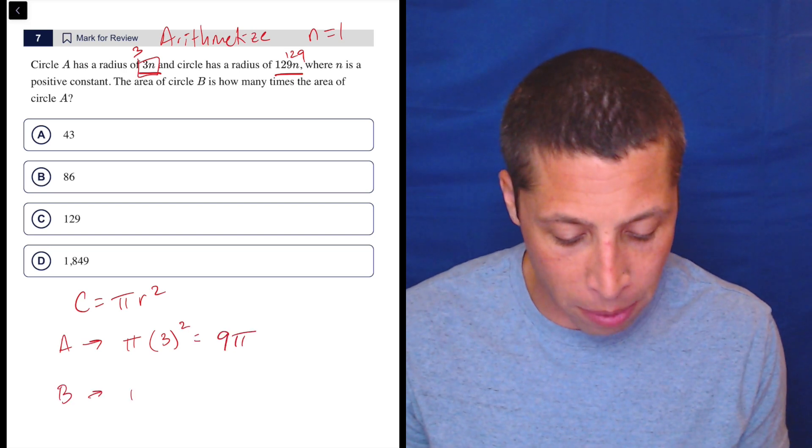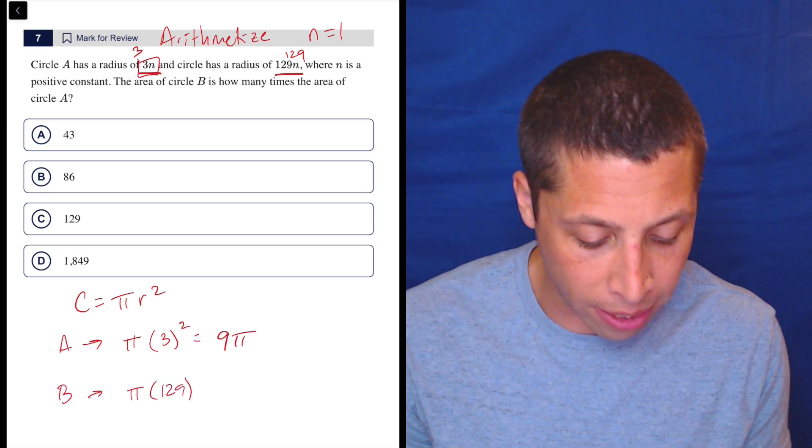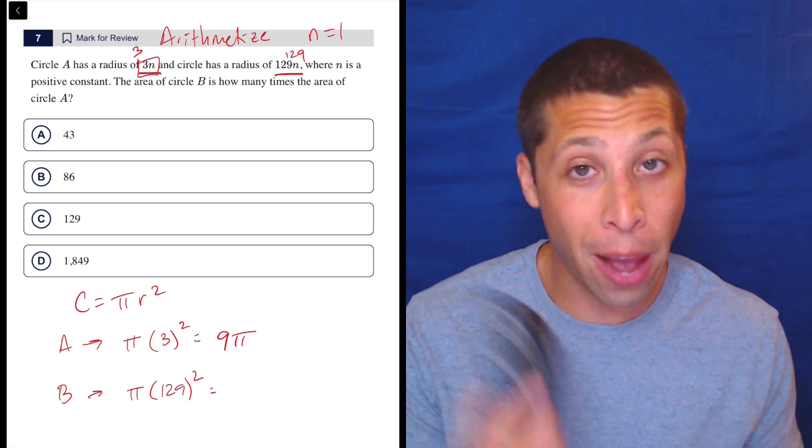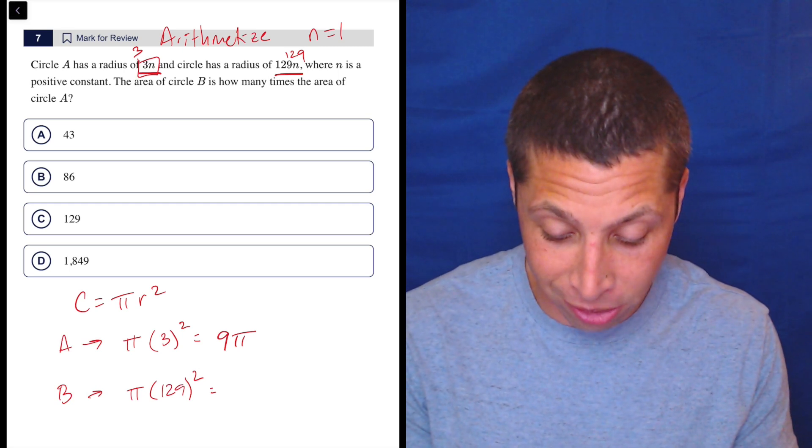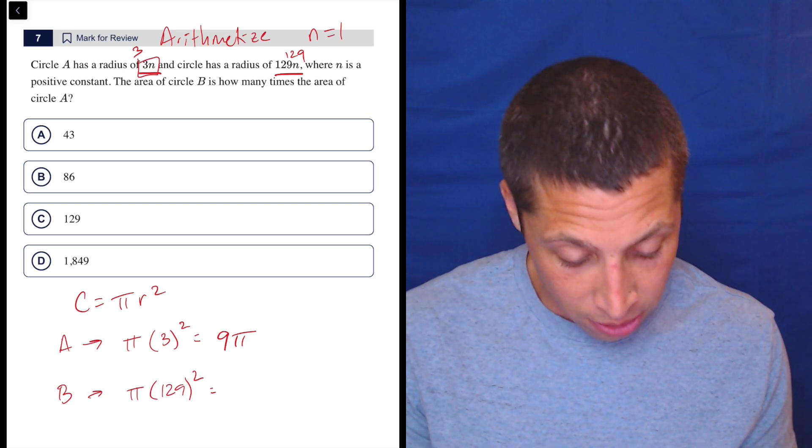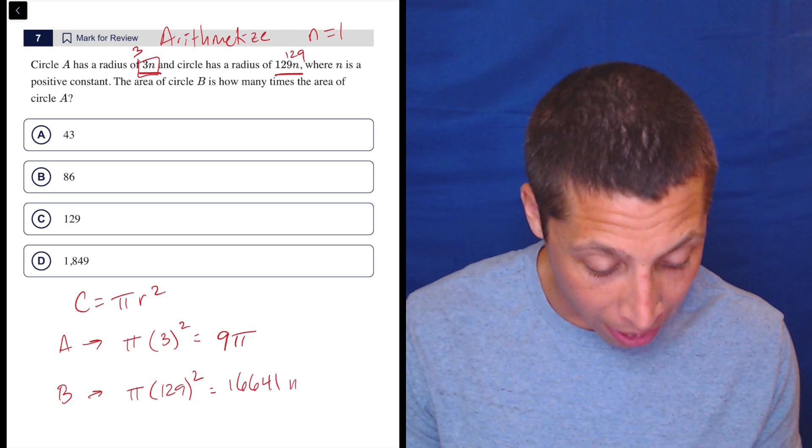And B is going to be pi times 129 squared. So I don't know that one off the top of my head, but 129 squared is 16641 pi.